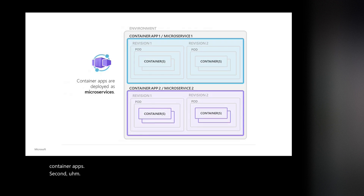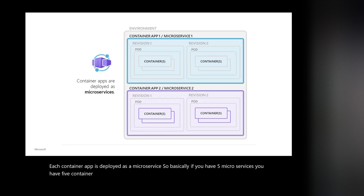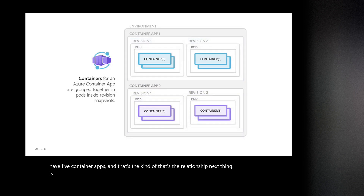Each container app is deployed as a microservice. Basically, if you have five microservices, you have five container apps — that's the relationship. Next, each container app can have multiple containers, and all of them will live in that particular container app.